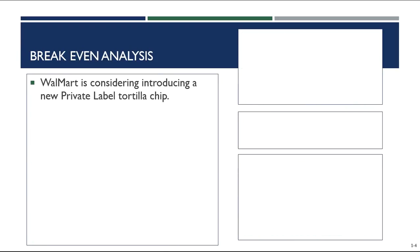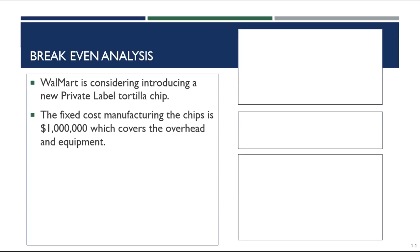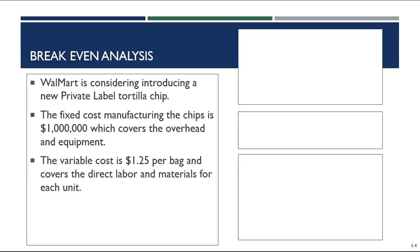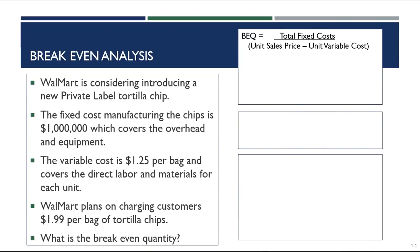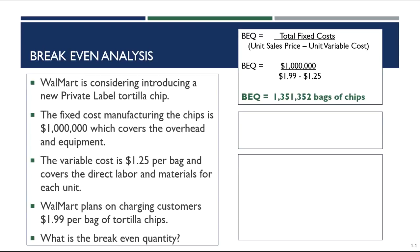Let's do another example. Let's say we're Walmart and we want to introduce a new private label tortilla chip. Our fixed cost is going to be $1,000,000, our variable cost is $1.25 per bag, and based on market analysis we've decided to charge customers $1.99 per bag. Using the breakeven quantity equation — $1,000,000 divided by ($1.99 minus $1.25) — Walmart needs to sell 1,351,352 bags of chips in order to make $0 in profit. Would Walmart introduce a new private label brand of chips to make $0 in profit? Absolutely not — they need to make a profit.